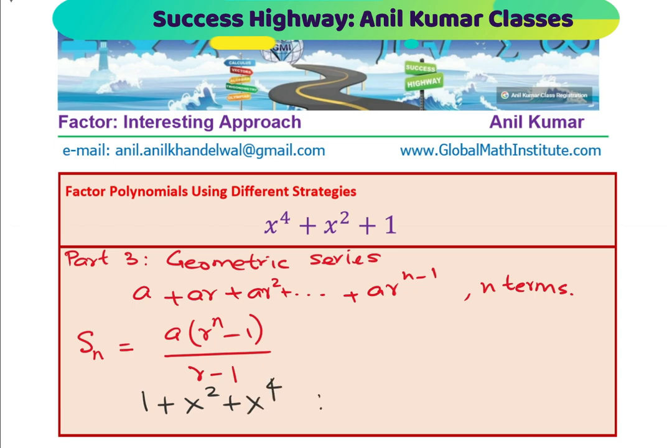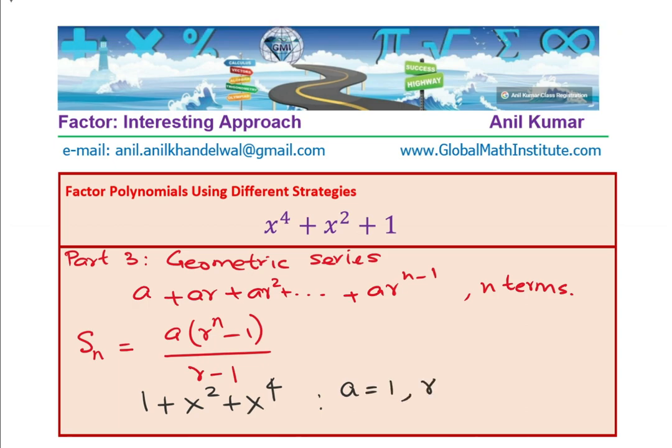In that case, you notice that the first term A is 1 and it is being multiplied each time by x square. So, if I apply the formula for the given series, what will I get?